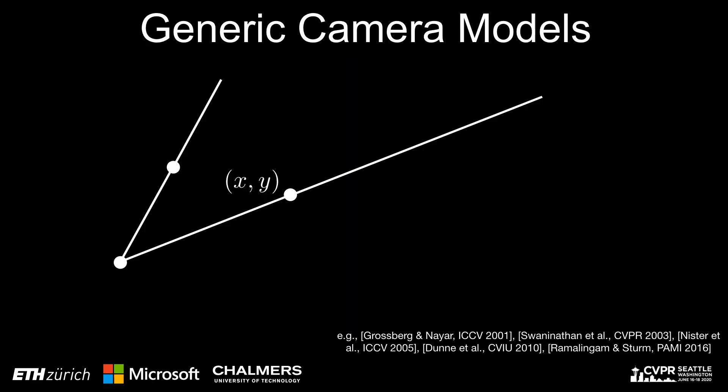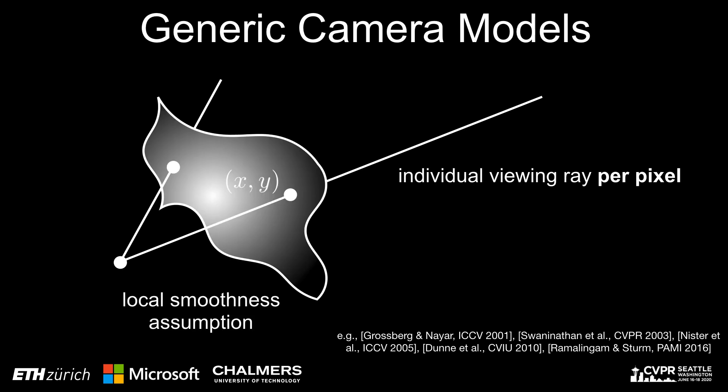Generic camera models define the mapping from pixels to rays on a per-pixel level without any physical interpretation of the camera geometry. They allow for completely independent rays for each pixel. However, in practice it is common to assume that the viewing rays vary smoothly and use this for regularization.